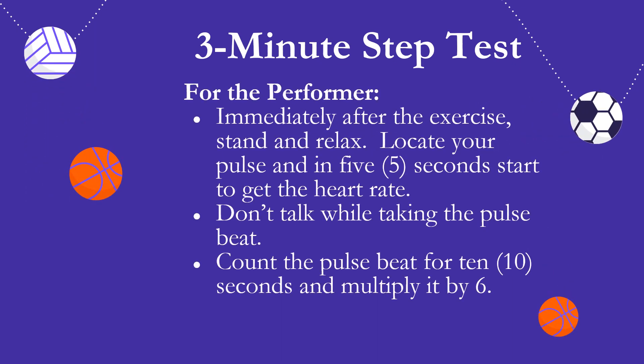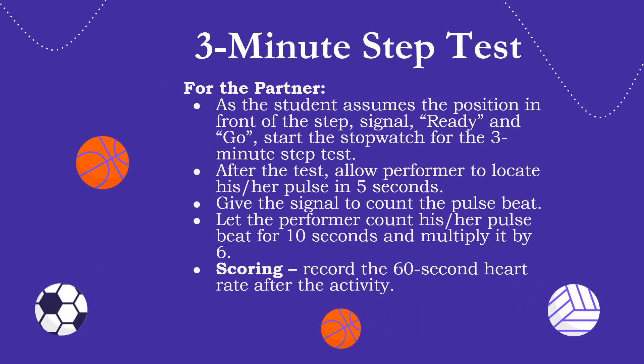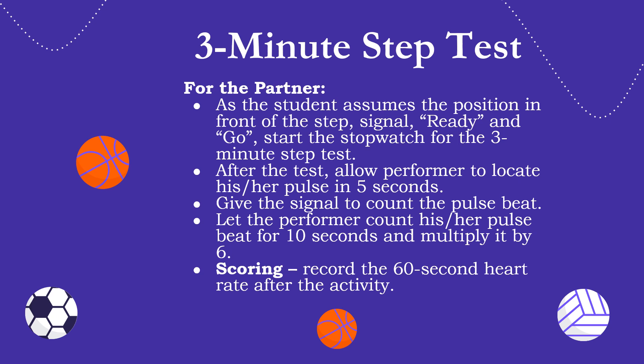Immediately after the exercise, stand and relax. Locate your pulse again and within 5 seconds start counting — don't talk while taking the pulse beat. Count the pulse beat for 10 seconds and multiply by 6. This result is your active pulse rate. Record both your resting pulse rate and active pulse rate in your notes. For the partner: signal ready and go, start the stopwatch, and after the test allow the performer 5 seconds to locate the pulse before signaling to count. Record the 60-second heart rate after the activity.